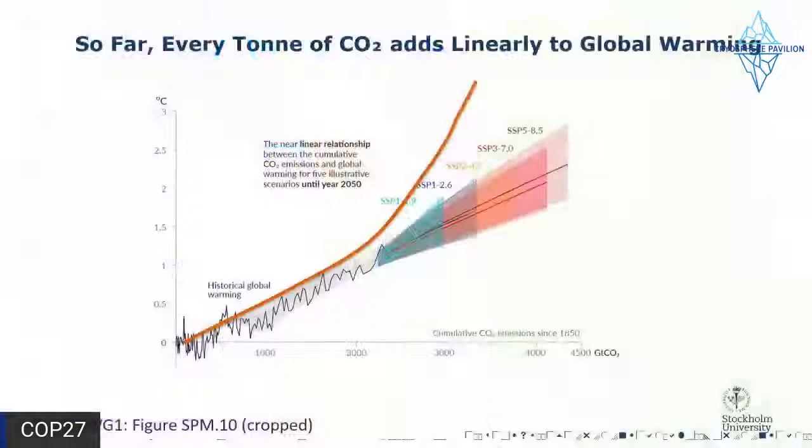I'm going to start with a broad-scale overview of the permafrost carbon feedback and tipping points, based on previous research including some of my own and some IPCC work. Looking at the IPCC AR6 Working Group 1 report: every ton of CO2 has added linearly to global warming since pre-industrial times. The graph shows cumulative CO2 emissions since 1850 on the x-axis and global warming on the y-axis.